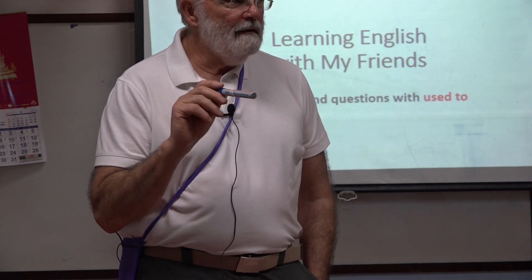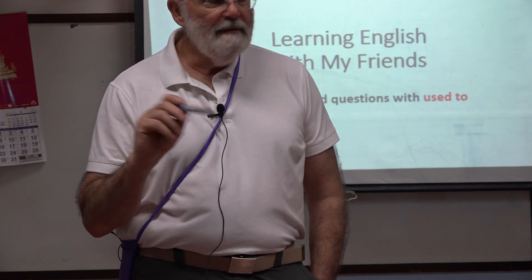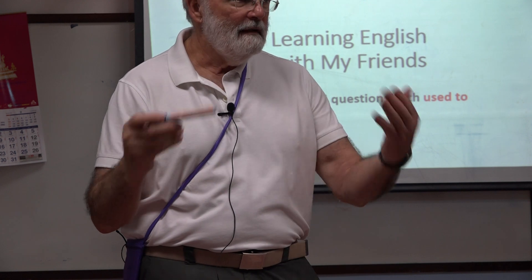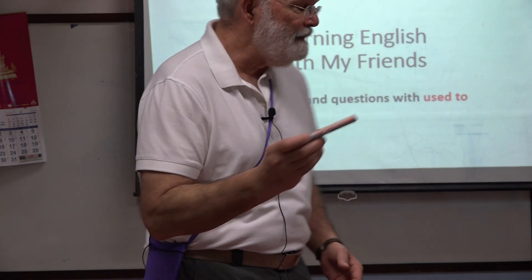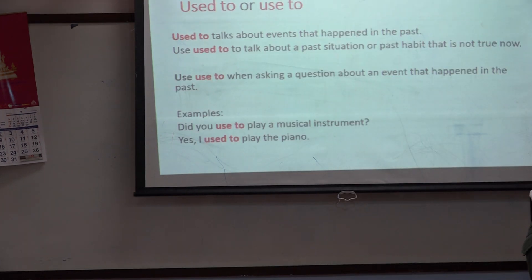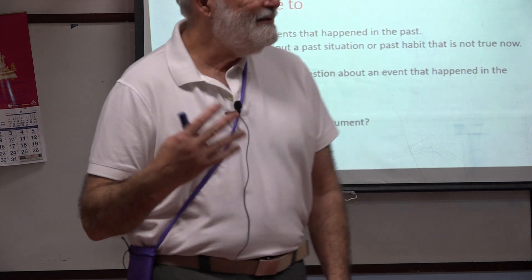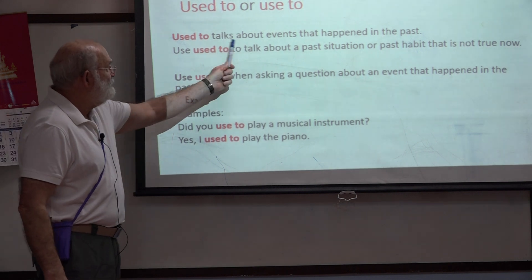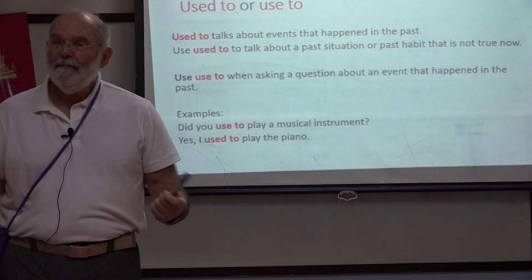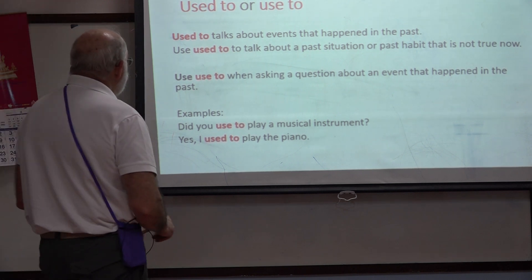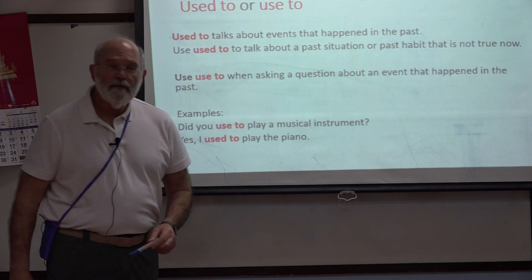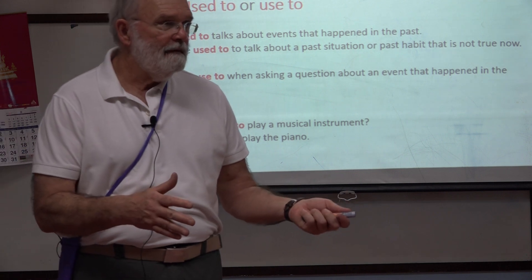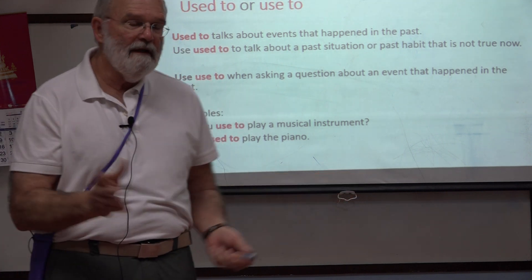We can use those words, 'used to', to mean different things, depending upon the context of the sentence — in other words, how the words are used in the sentence, the words around them. We say 'used to' to talk about events, something that happened in the past — a past situation or maybe a habit that we've had that we no longer have.